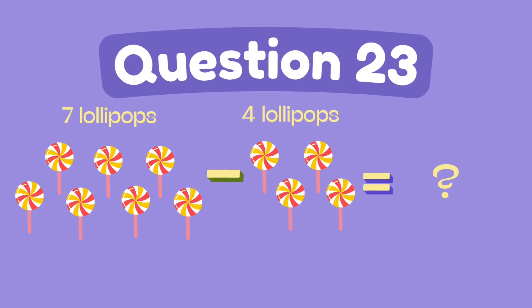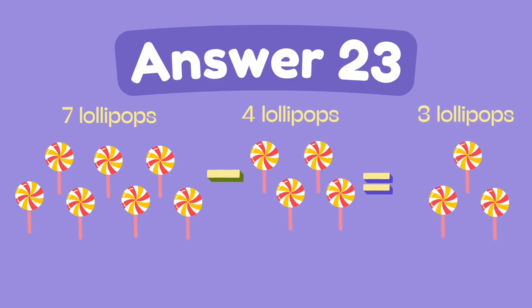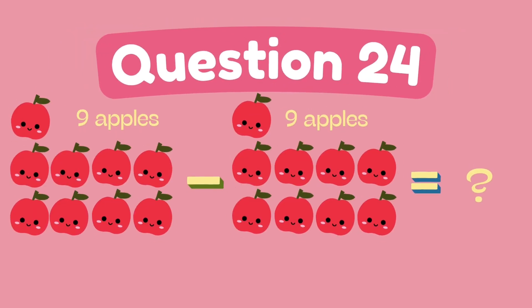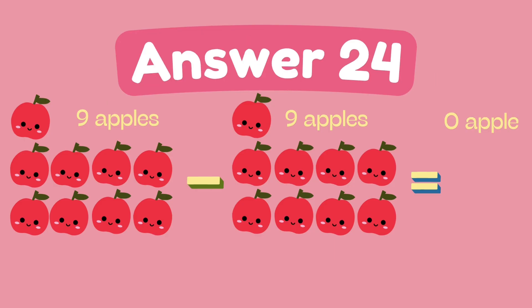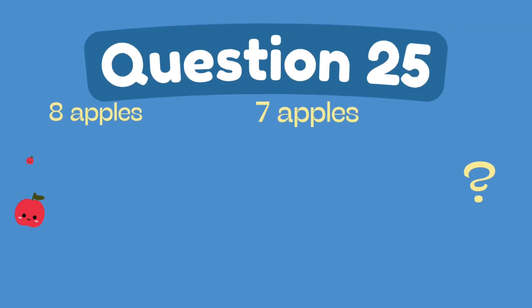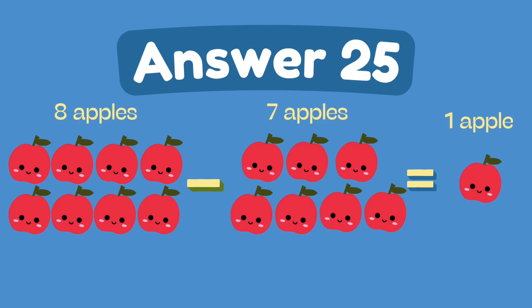What is 7 minus 4? The answer is 3. What is 9 minus 9? What is 8 minus 7? The answer is 1.